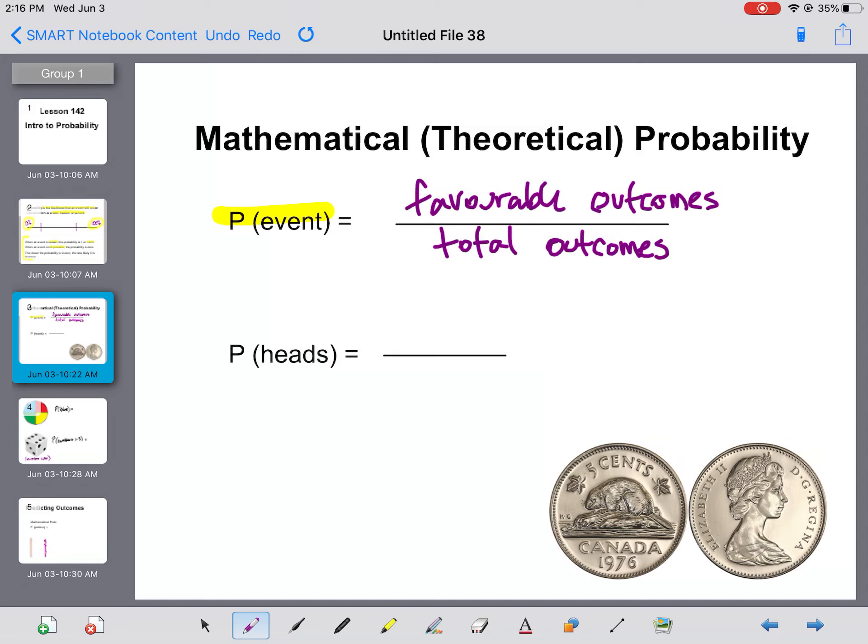And all that means is if you're looking at the probability of something, you put on the top of your fraction the outcome that you are looking for. So if we're looking at the probability of flipping a coin and getting heads on that coin, we would want to put the heads on the top over the total number of outcomes. Now because coins only have two sides, there's one side that is heads out of two sides total.